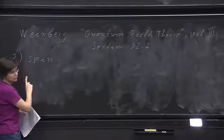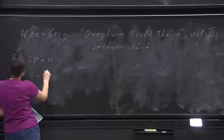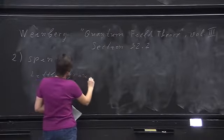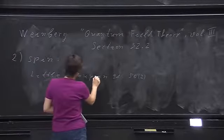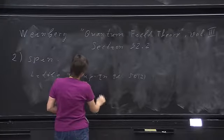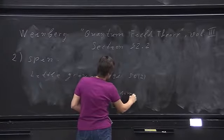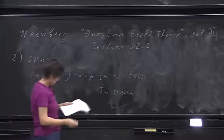How do we define spin in higher dimensions? The key difference is: in four dimensions, the little group is just SO(2), so it's easy to label representations, and that label is spin — one label is enough. In D dimensions, more labels are needed, so one needs to specify how exactly we define spin.